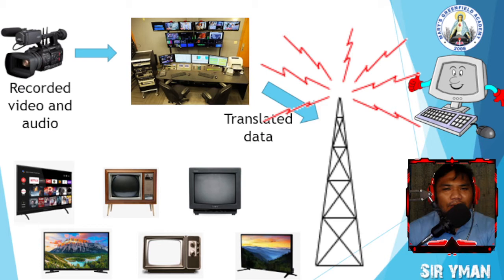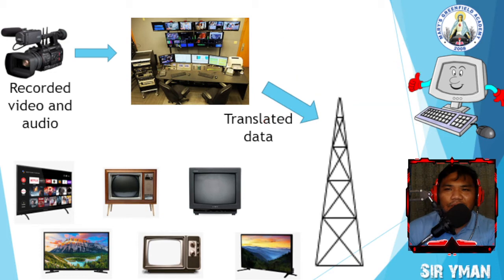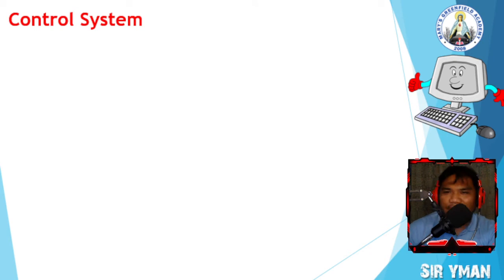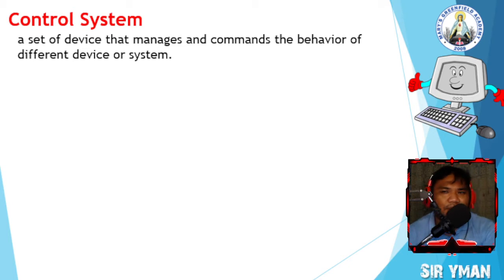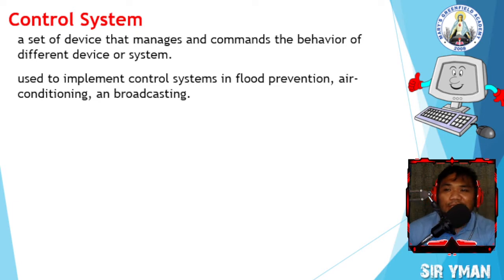Naintindihan ba? Understood? So that's the use of computer in information and communication. Next, computers are used as a control system. A control system is a set of devices that manages and commands the behavior of different devices or systems. They are used to implement control systems in flood prevention, air conditioning, and broadcasting.